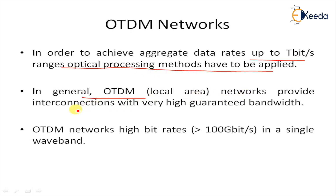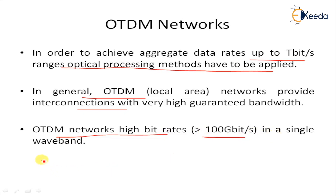In general, OTDM — optical time division multiplexing — local area networks provide interconnection with very high guaranteed bandwidth, low latency, and broadcast capability, resulting in bandwidth on demand with low access delay. In contrast with WDM, which divides fiber bandwidth into many optical wave bands carrying information at a rate of 2.5 to 40 gbps, OTDM networks provide a higher data rate greater than 100 gbps in a single wave band.